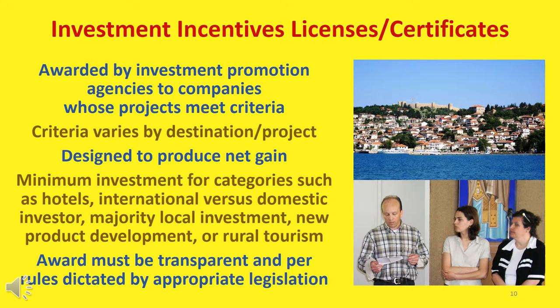Investment promotion agencies award incentive licenses or certificates to companies whose projects meet their investment criteria, which vary greatly from destination to destination. Incentive criteria are designed to produce benefits that exceed costs, thereby bringing a net gain to the community. Often there is a minimum investment required — for example, $3 million for a hotel or $500,000 for international developers as opposed to $100,000 for local developers. Sometimes preferences are given to projects that include at least 51% local investment, develop new products that add to the destination mix, or help develop tourism in rural areas. Regardless of the criteria, incentives must be awarded in a transparent manner according to automatic rules as dictated by appropriate legislation.